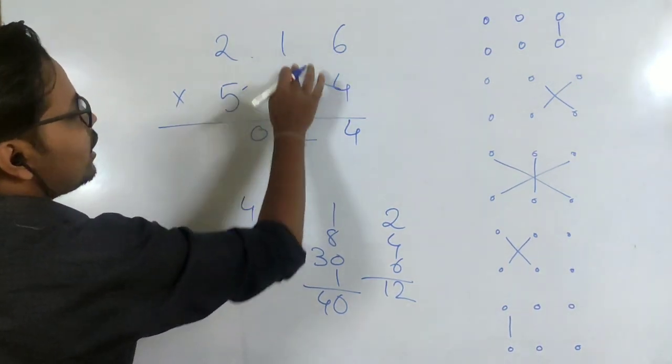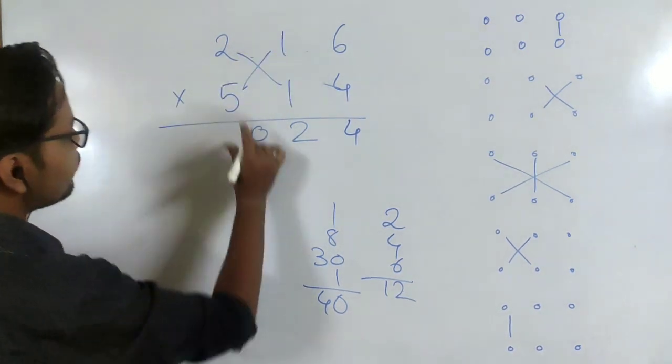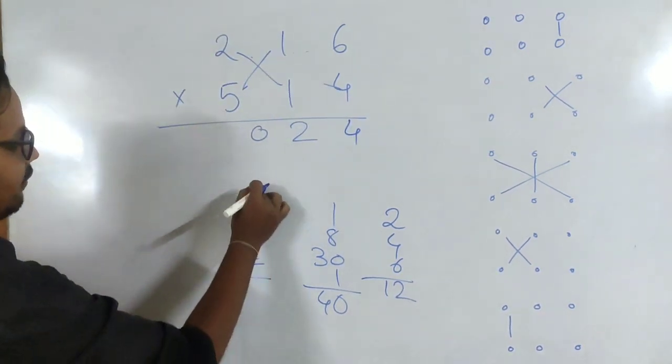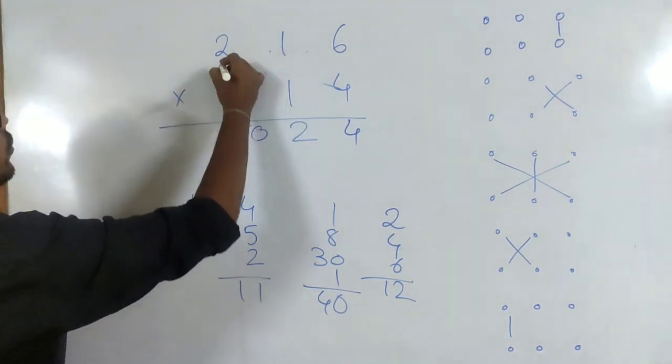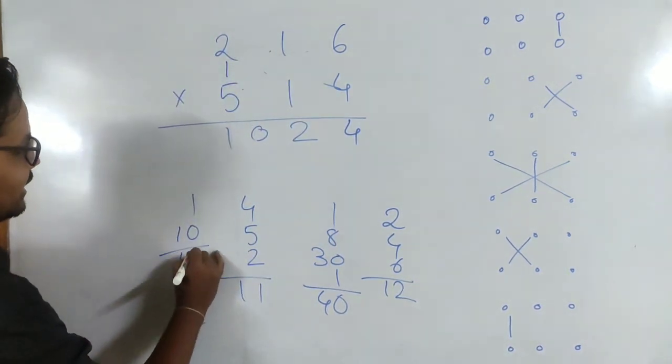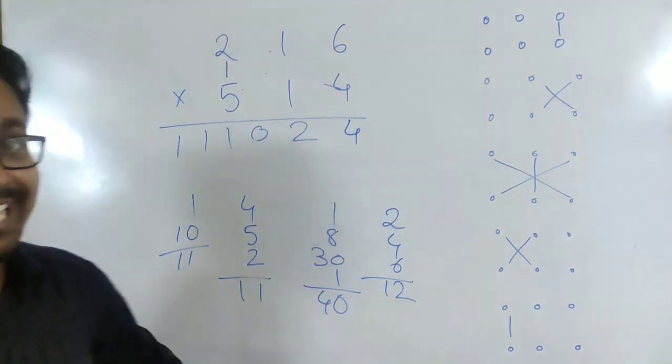Next step, we are moving to this one. So we go for this criss cross. 5 × 1 are 5, 2 × 1 are 2. And we get 5 plus 4 is 11. 1 is written here, 1 gets carried over. And in the last step we do 2 × 5 which is 10, it's 11. And here we go. It's 111024. And that's the answer.